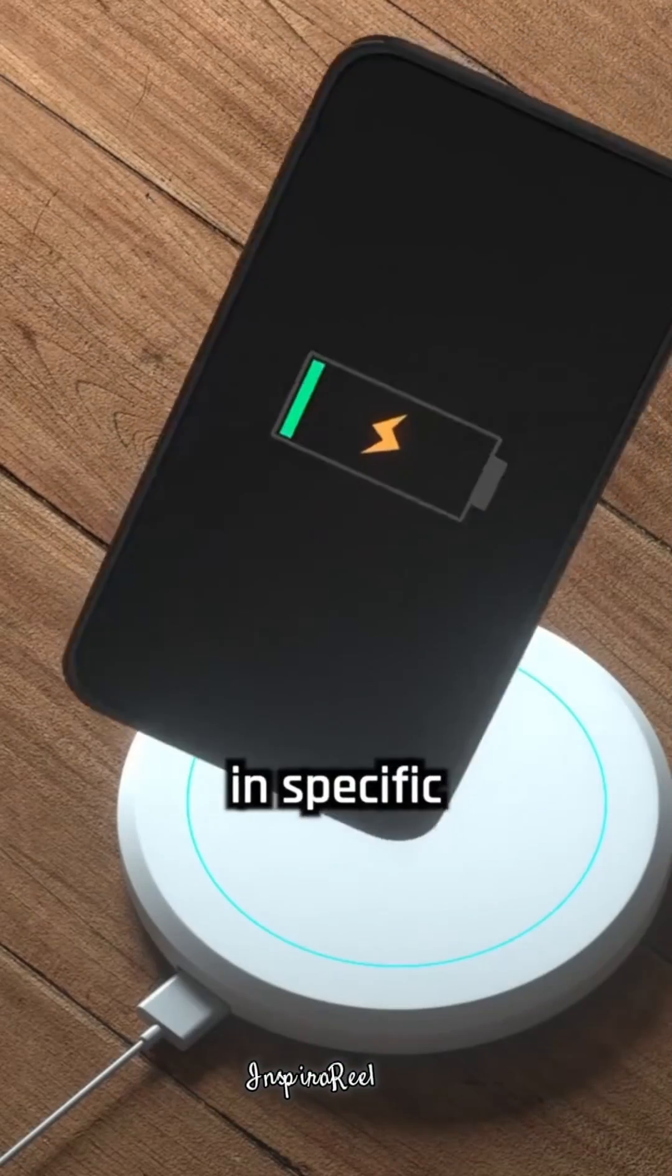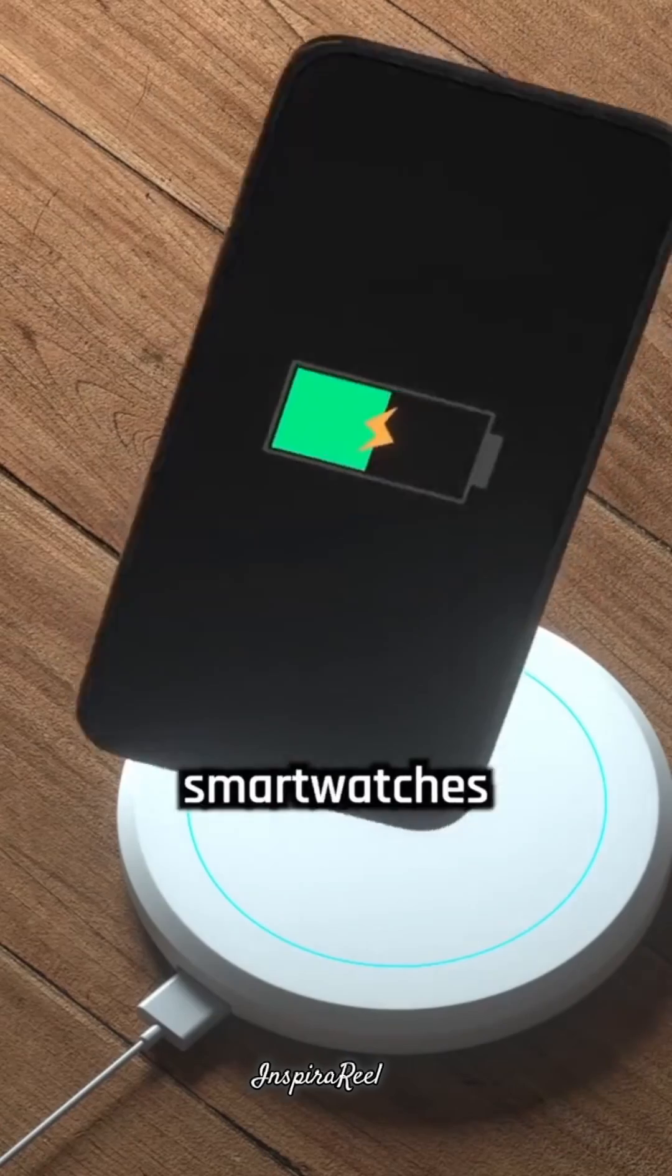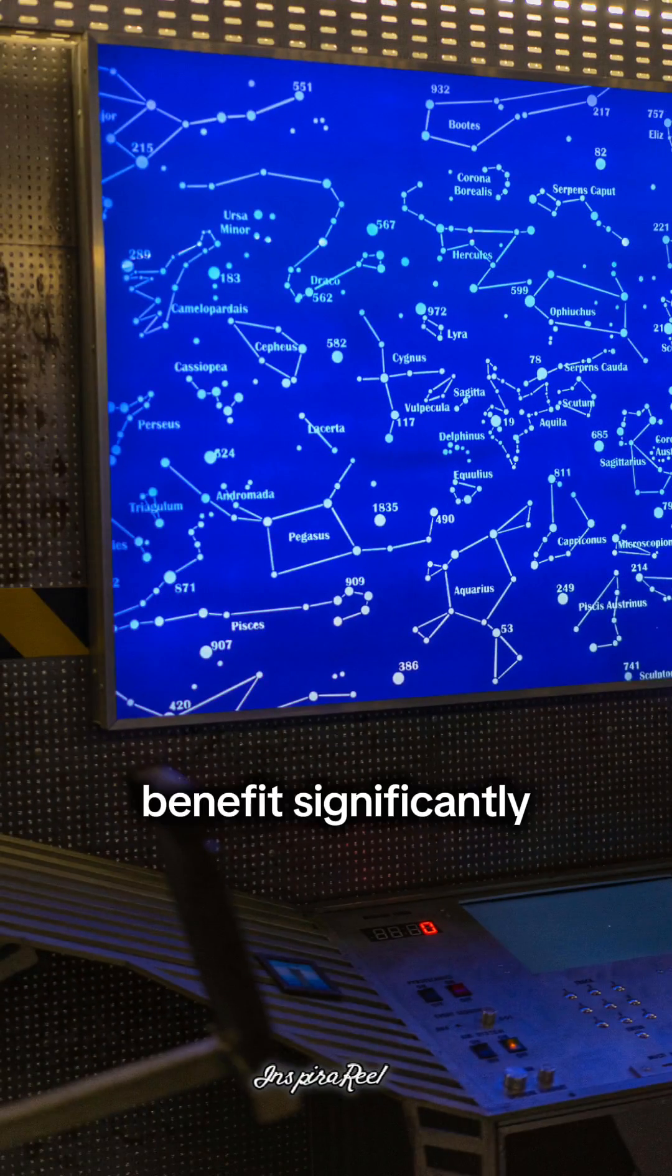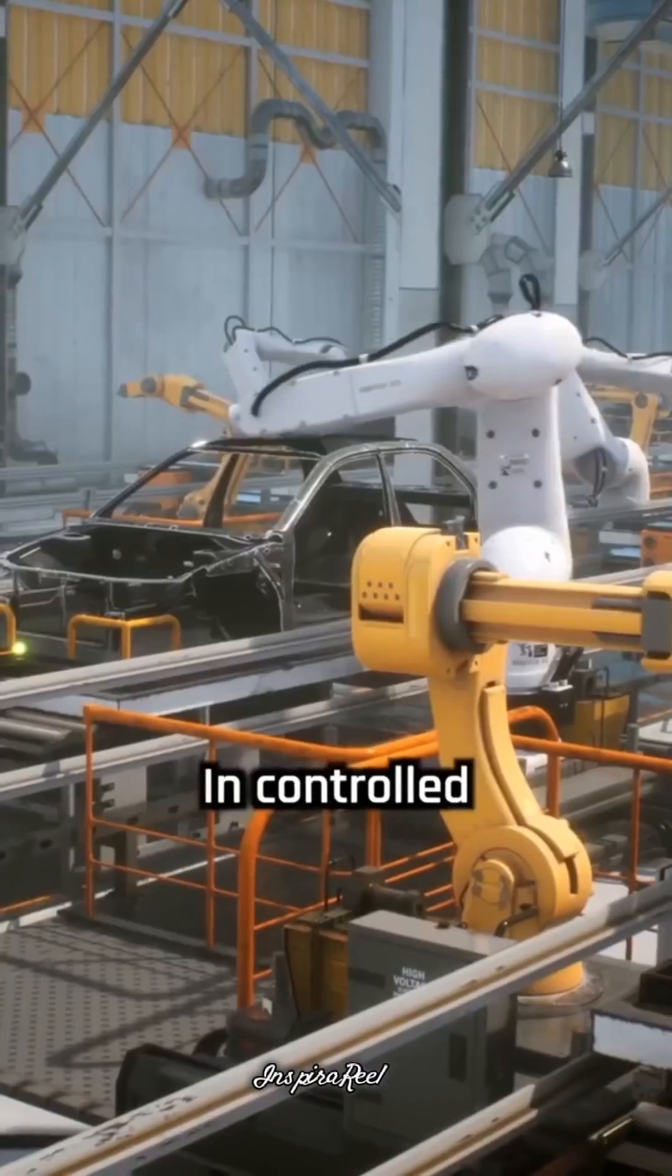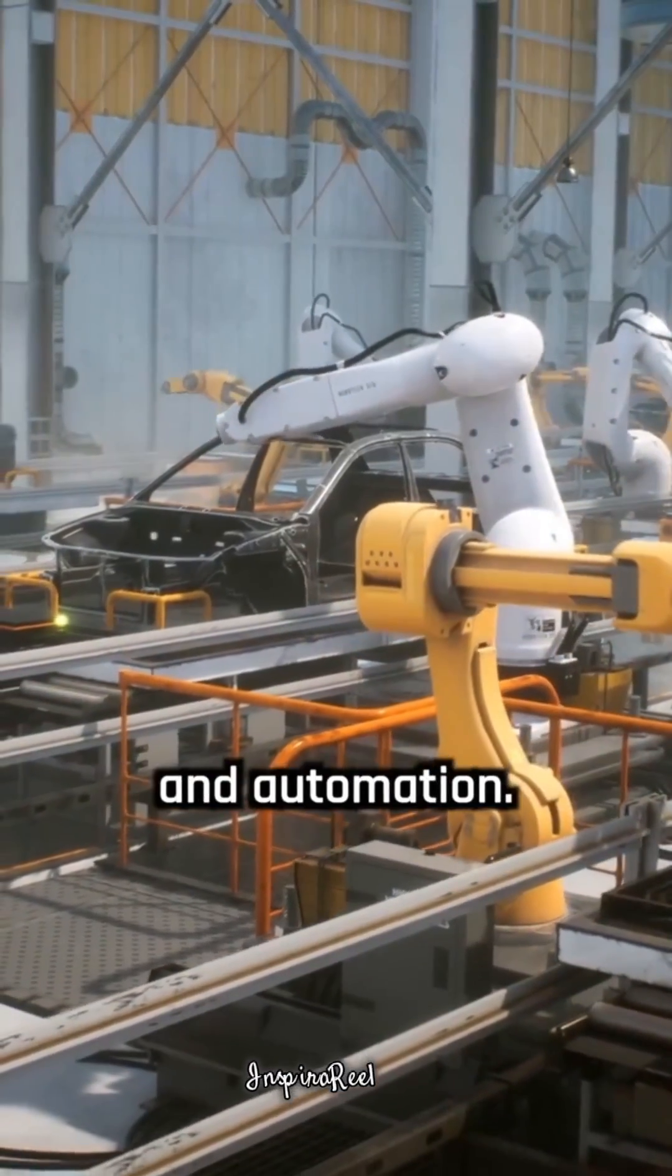Wireless electricity thrives in specific use cases. Wireless charging pads for smartphones, earbuds, and smartwatches are gaining popularity, and medical implants like pacemakers benefit significantly from wireless charging. In controlled industrial settings, wireless power streamlines robotics and automation.